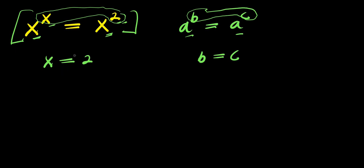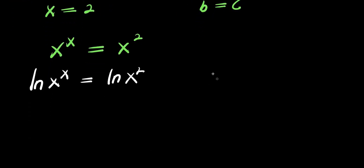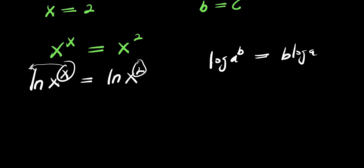We also have another solution to this exponential problem. Let's recopy this problem: x to the power of x equals x to the power of 2. We can make use of natural log: ln(x^x) = ln(x^2). Applying the logarithm power property — log(a^v) = v·log(a) — the exponent x comes down in front of ln and the 2 comes down as well. So we get x·ln(x) = 2·ln(x).